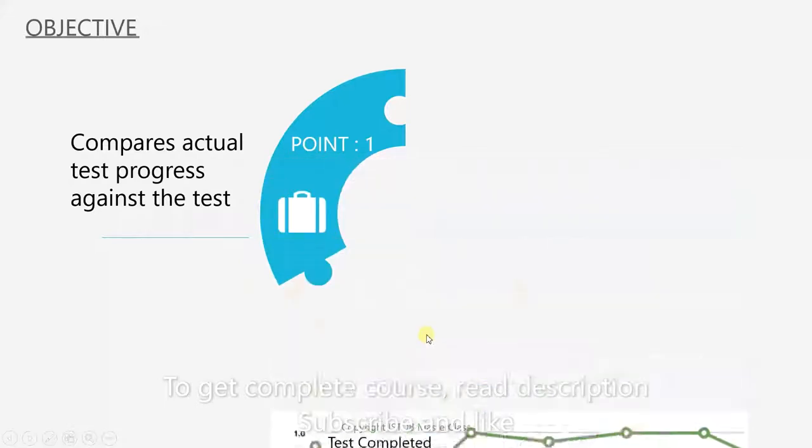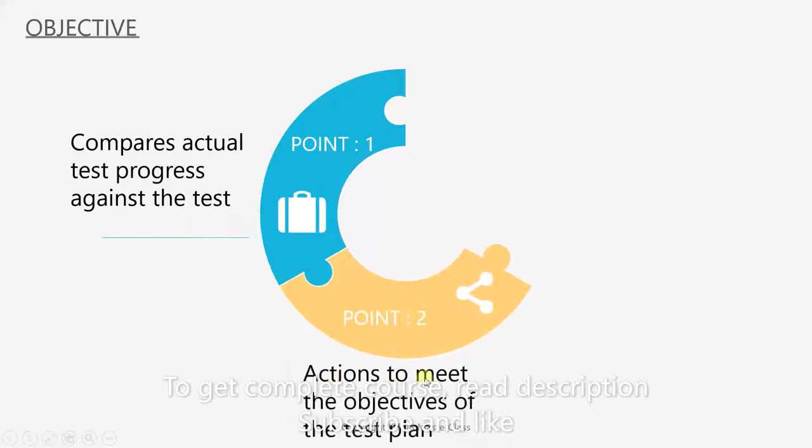But if we are underperforming, then we need to take actions to meet the objectives of the test plan. What actions can we take? Do we need to change the timetable or do we need to allocate more resources? These are the decisions we have to take by going back to the planning stage.